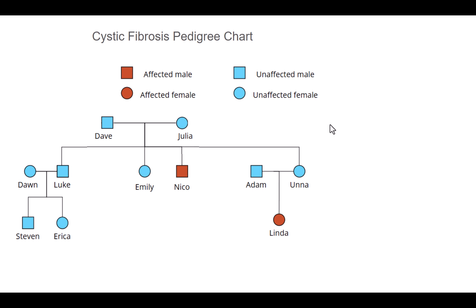Here's another gene tracking tool — a pedigree chart looking at the occurrence of cystic fibrosis in a family. The key gives us information about the gender of the individuals and whether they are affected or unaffected. We might be expected to use that to work out the genotypes of individuals in the pedigree chart, and this might be used to help make predictions about the likelihood of certain offspring having cystic fibrosis.